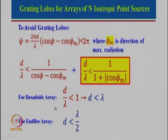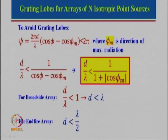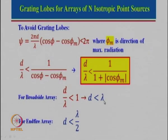For the broadside case, phi_m equals 90 degrees and cos(90) is 0, so d/λ should be less than 1. If you are designing a broadside array, d should be less than lambda. For an end-fire array, d must be less than lambda by 2, and for broadside d should be less than lambda.